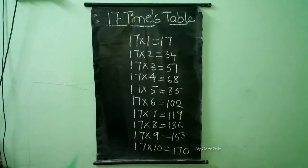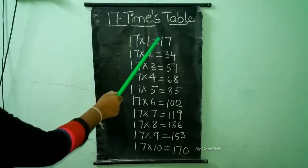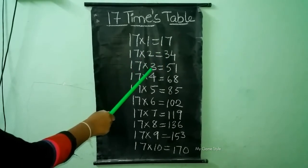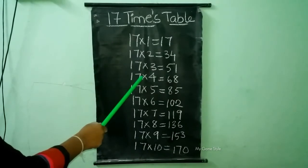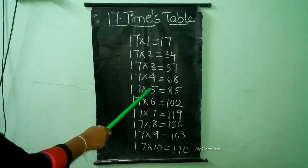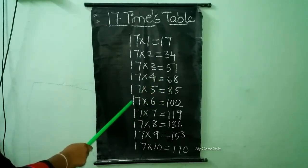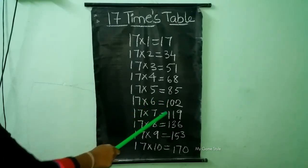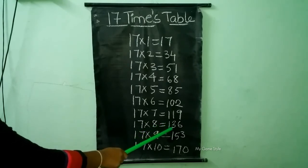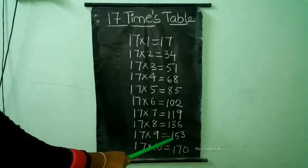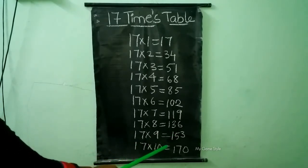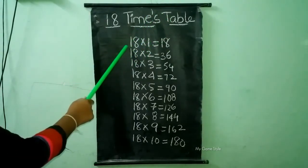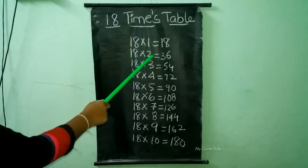17 times table. 17 times 1 is equal to 17. 17 times 2 is equal to 34. 17 times 3 is equal to 51. 17 times 4 is equal to 68. 17 times 5 is equal to 85. 17 times 6 is equal to 102. 17 times 7 is equal to 119. 17 times 8 is equal to 136. 17 times 9 is equal to 153. 17 times 10 is equal to 170.